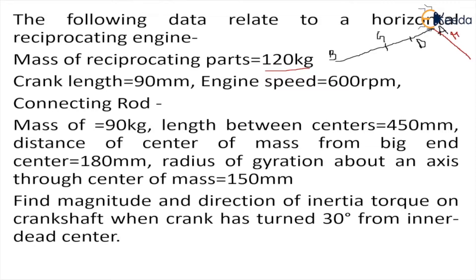The speed of the engine is 600 rpm. For the connecting rod, the mass and the length between centers are given. The distance of the center of mass from the big end — the big end being at the crank pin side — is 180 mm, and the radius of gyration from the center of mass is 150 mm.